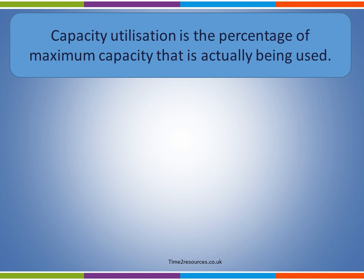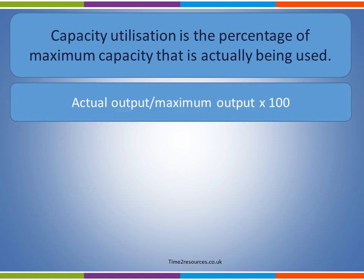This can be calculated using the formula: actual output divided by maximum output, times 100.